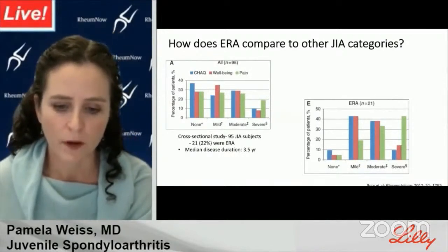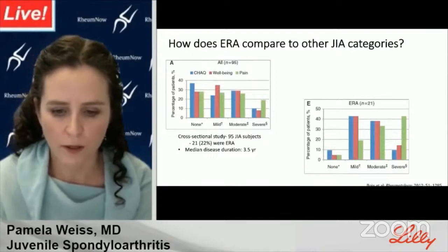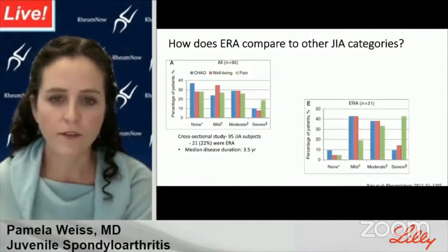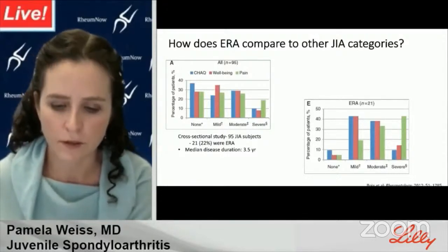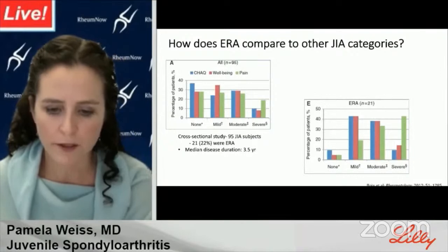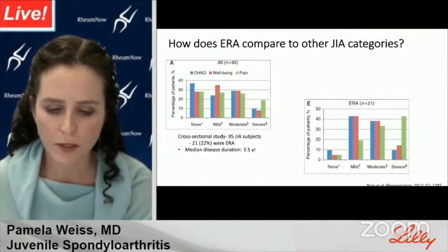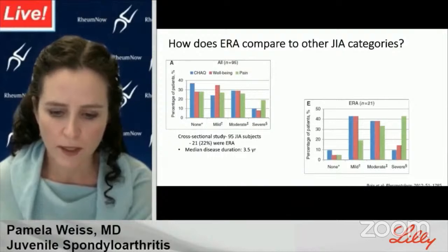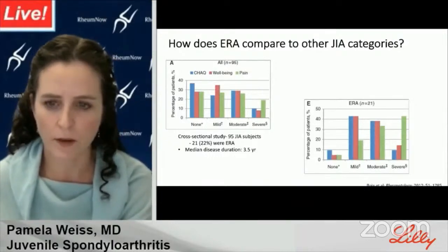Moving on to the epidemiology and disease course of juvenile SpA: this is data from a cross-sectional study of 95 subjects, 21 of whom had ERA. The median disease duration at study entry was 3.5 years. Outcomes of interest were function measured by the CHAQ, well-being, and pain. Half of the ERA patients had moderate-to-severe functional impairment, moderate-to-severe impaired well-being, and 43 percent of the children reported severe pain — so these kids need help and we're doing a so-so job at the moment.